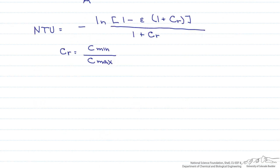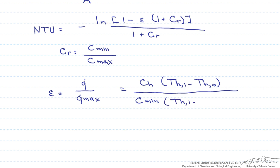Next we have to find our effectiveness. The effectiveness is the heat transfer rate divided by the maximum heat transfer rate. This is equal to the heat capacity rate of the hot fluid times the difference in temperature of the fluid coming in and out, divided by our minimum heat capacity rate times the temperature of the hot fluid coming in minus the temperature of the cold fluid coming in.